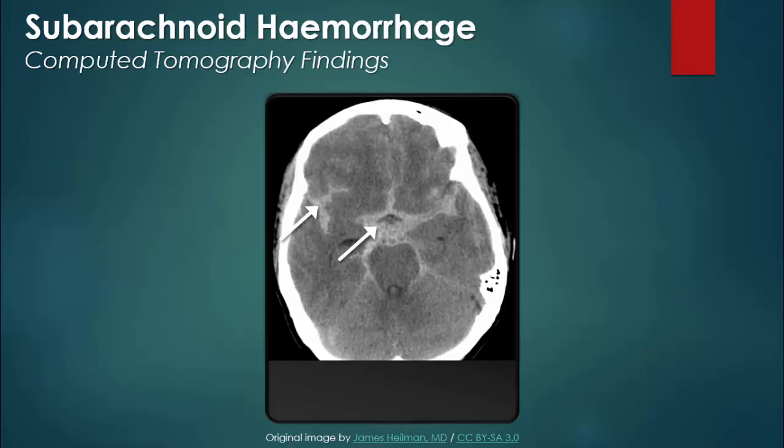This non-contrast CT was taken from a patient with a subarachnoid hemorrhage. The white arrows are pointing to areas in the subarachnoid space, or more specifically, the basilar cisterns and the sulci. In this patient, those areas are hyperdense, meaning that they are a lighter shade of gray than what is normal. In the appropriate clinical context, high attenuation in these locations indicates the presence of blood and thus a subarachnoid hemorrhage.